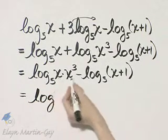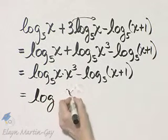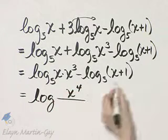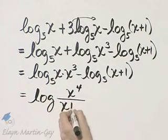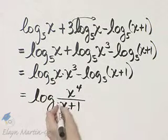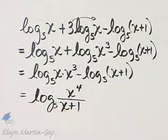This is my numerator. Let's go ahead and write that as x to the fourth over, this is my denominator, x plus 1. And the base stays as base 5.